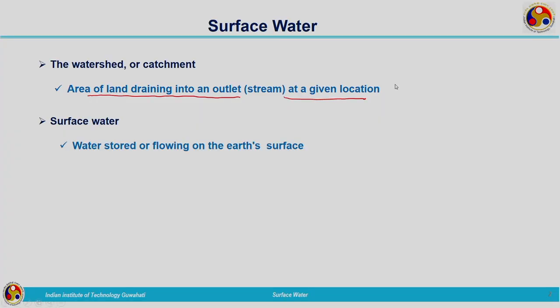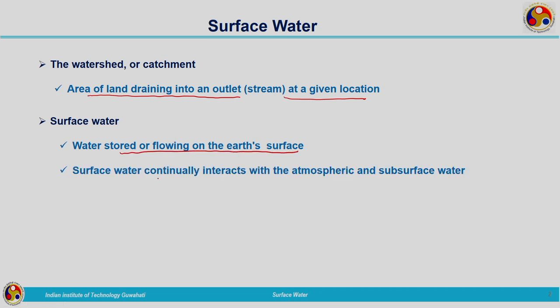Coming to surface water, it is the water stored or flowing on the earth's surface. Surface water has continuous interaction between the atmospheric water and subsurface water. Whenever rainfall is occurring, it falls on the ground, and due to the process termed as evaporation it is converted to vapor form, which is again converted back to liquid falling on the ground. This is a continuous process. At the same time, surface water is also getting infiltrated into the ground, creating continuous interaction with subsurface water.